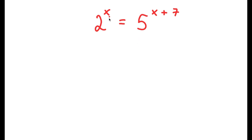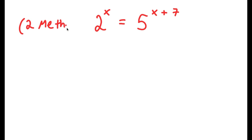Alright, so in this problem I have 2 to the power of x is equal to 5 to the power of x plus 7. I actually have two methods to solve this problem, so make sure to stick around for the video to see me solve both methods.